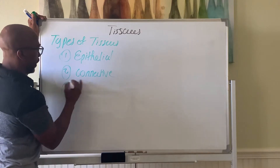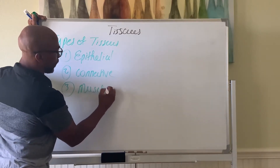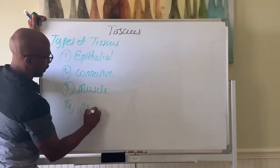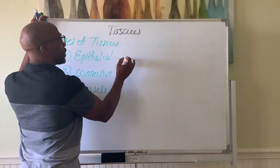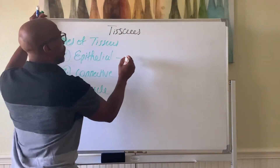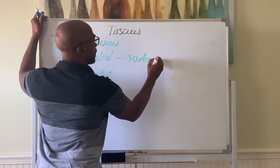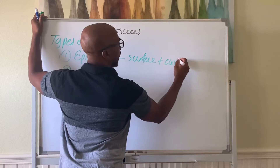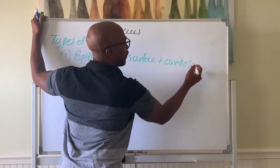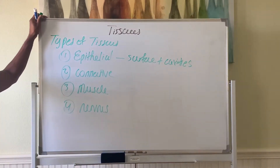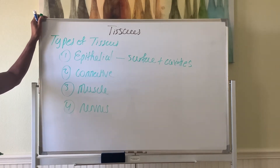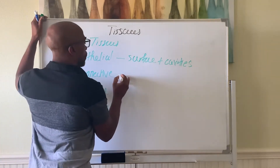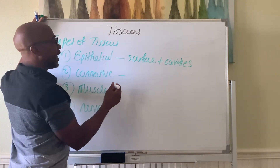Epithelial tissue is found at your surfaces and cavities — like your skin surface and cavity linings. For example, in your mouth, that's epithelial tissue. All the lumens of the cavities of organisms in your body are made up of epithelial tissue, found at surfaces and cavities.